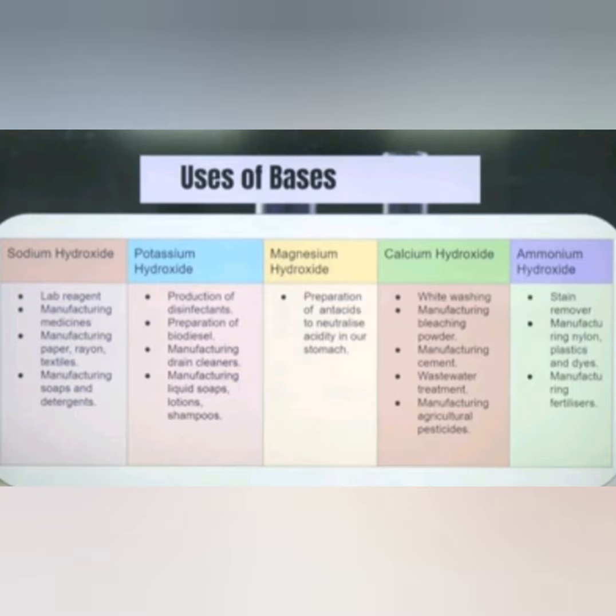Calcium hydroxide is also known as lime water, though it is different from lemon water. It is used in wastewater treatment plants and it is also used to make agricultural pesticides that are used to remove pests from crops.